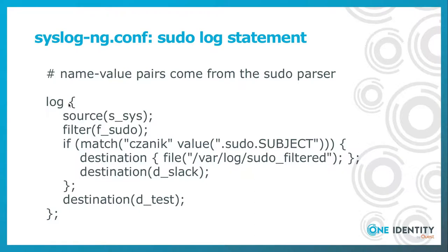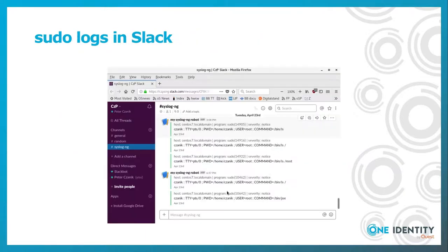We have here a log statement which connects all of the building blocks together. We have the source — the very same source we used previously for word log messages can be used here for local log messages. We filter them with the sudo filter, and then we have the most interesting part: another filter checking a given name-value pair from the parsed sudo logs, and if it equals my username, the alert is sent to Slack. Here is a screenshot from Slack — you can see all the different commands executed by me through sudo.